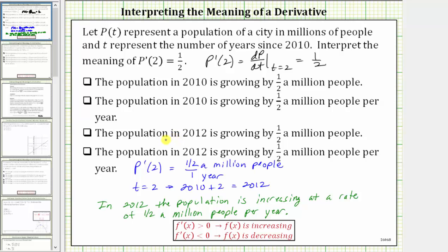Here we have the population in 2012 is growing by half a million people. This cannot be correct because notice how this is showing an amount of growth, not a rate of growth.